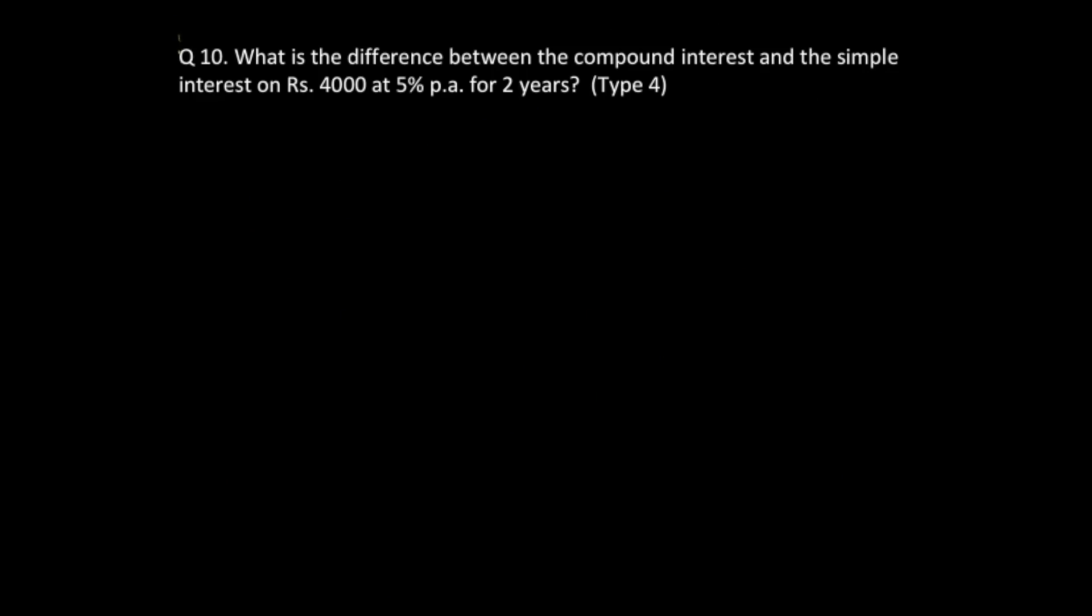Let's have a look at question number 10. This is Type 4, where we have both compound interest and simple interest. The question asks: What is the difference between the compound interest and the simple interest on Rs. 4000 at 5% per annum for 2 years?